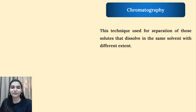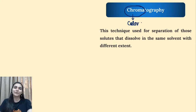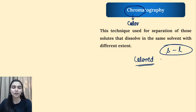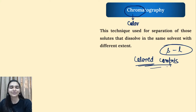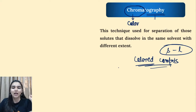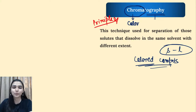Chromatography — 'chroma' means color. Why do we need it? Evaporation has a drawback: if you have colored components in solid-liquid mixtures, evaporation cannot separate them. So we have chromatography. 'Chroma' itself means color, and 'graphy' comes from 'graph' — we make a graph experimentally. The principle of chromatography is very important and will definitely be asked in the exam, so write it down in your notebook.